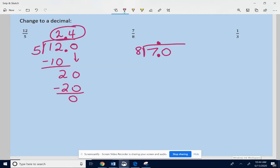8 won't go into 7, so add a 0. 8 into 70. Let's see. 8 times 9 is 63. No, 8 times 9 is 72, but 8 times 8 is 64. So let's try 8. 8 times 8 is 64. Subtract.